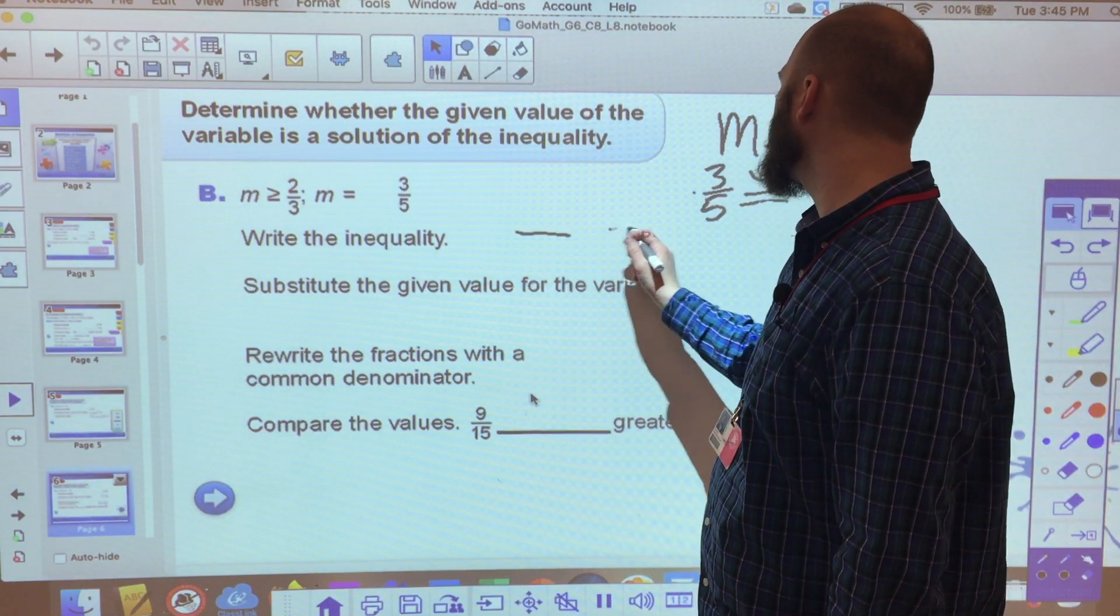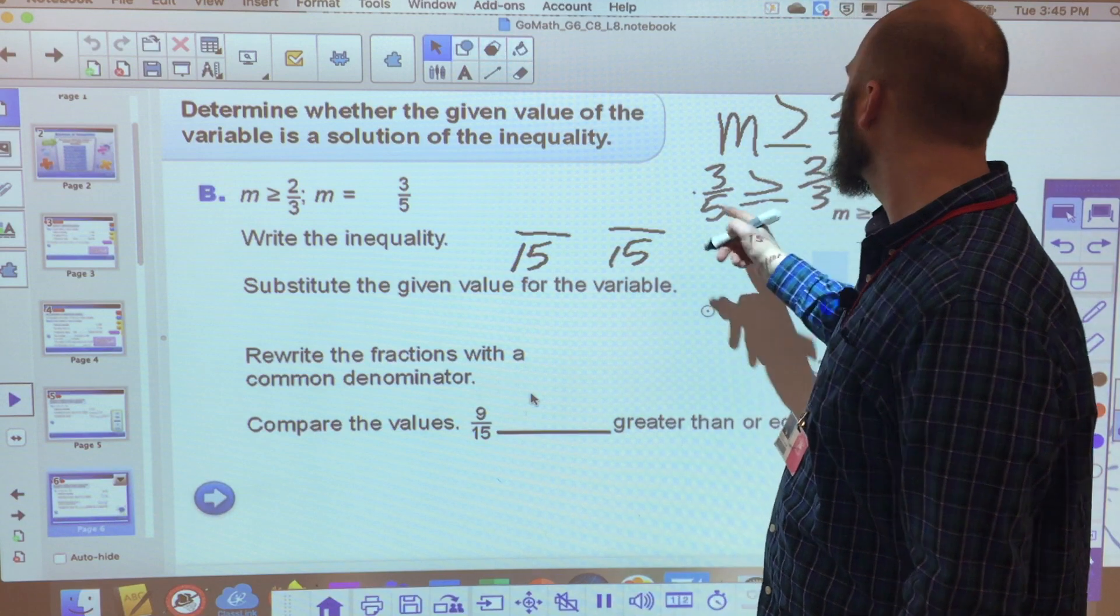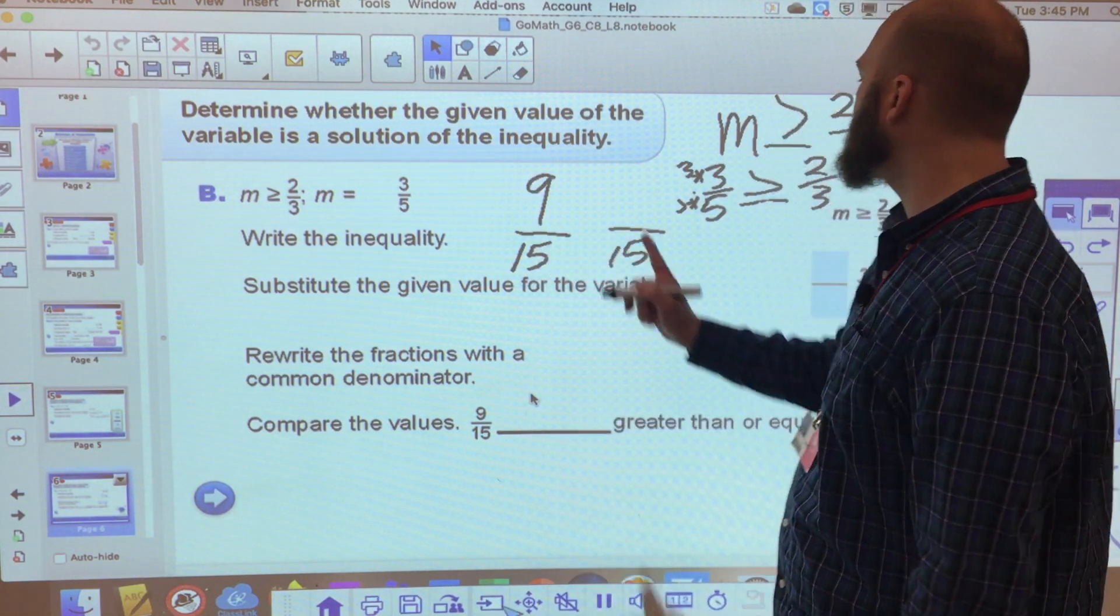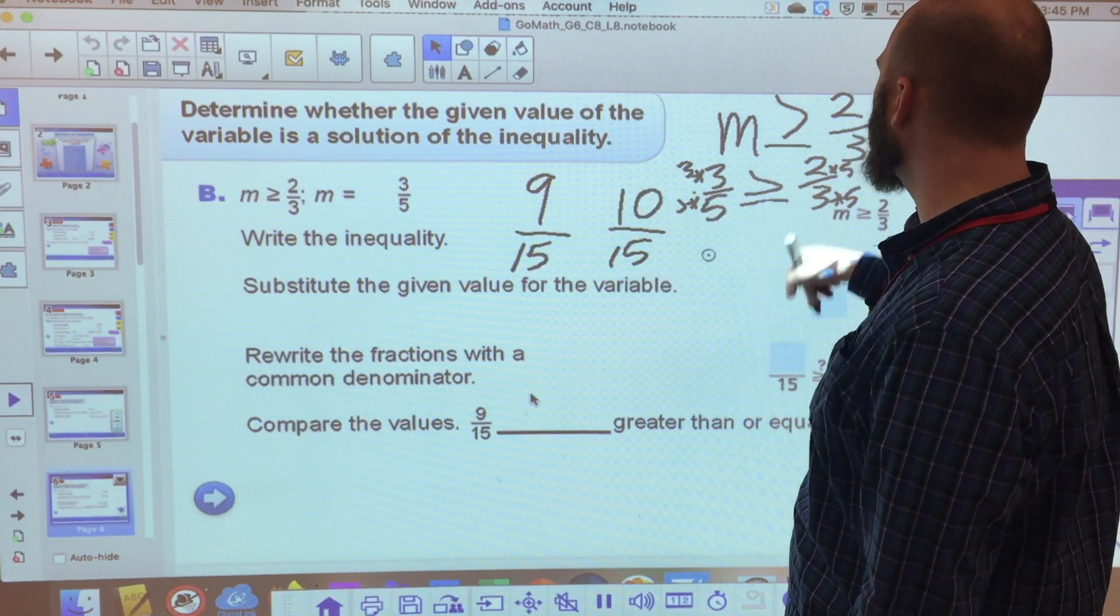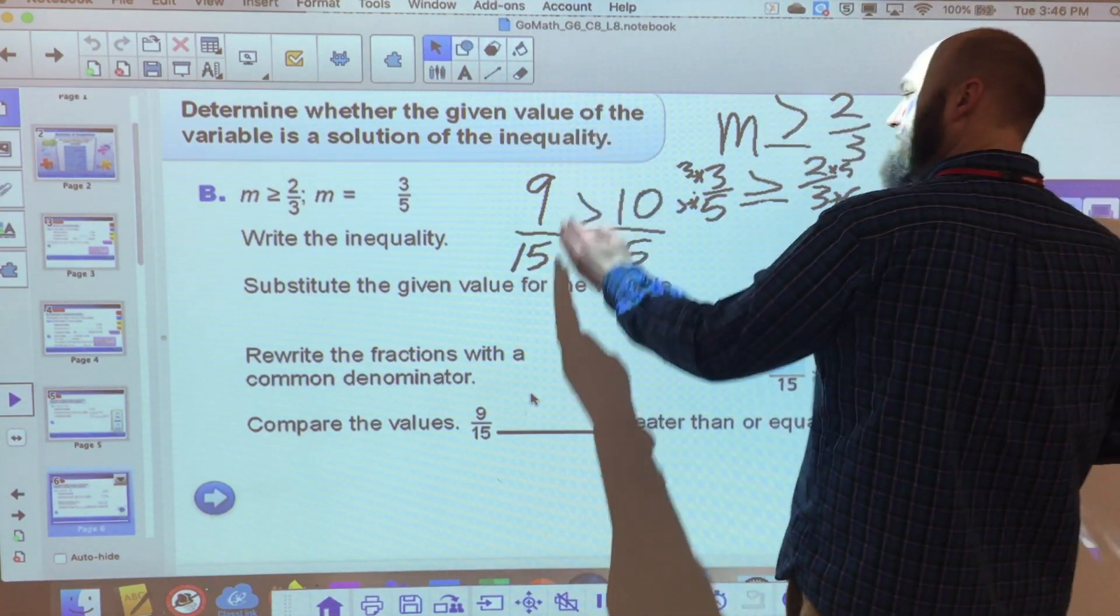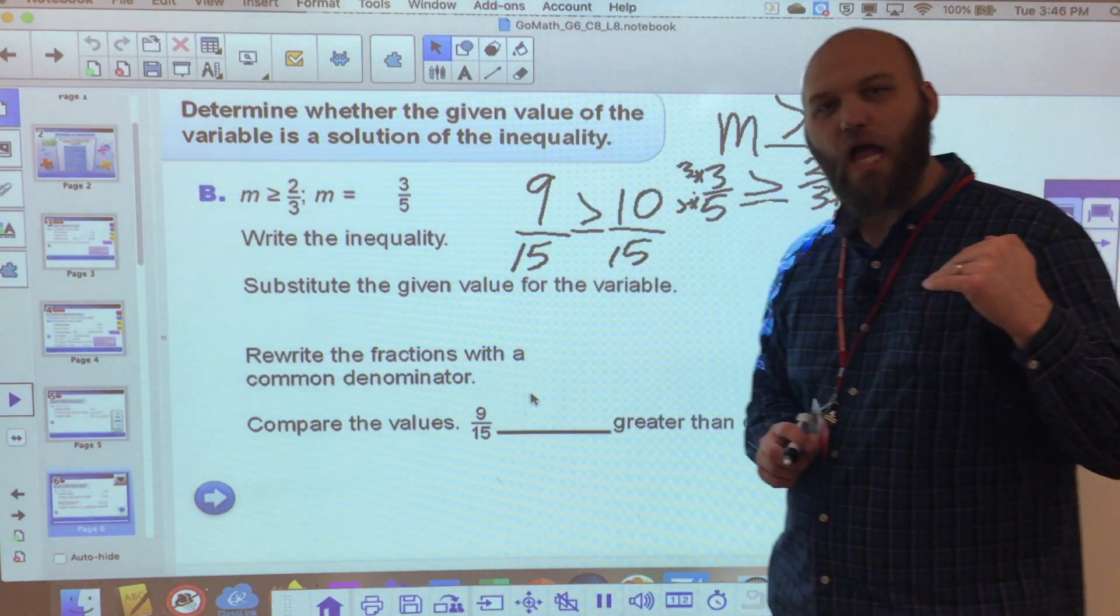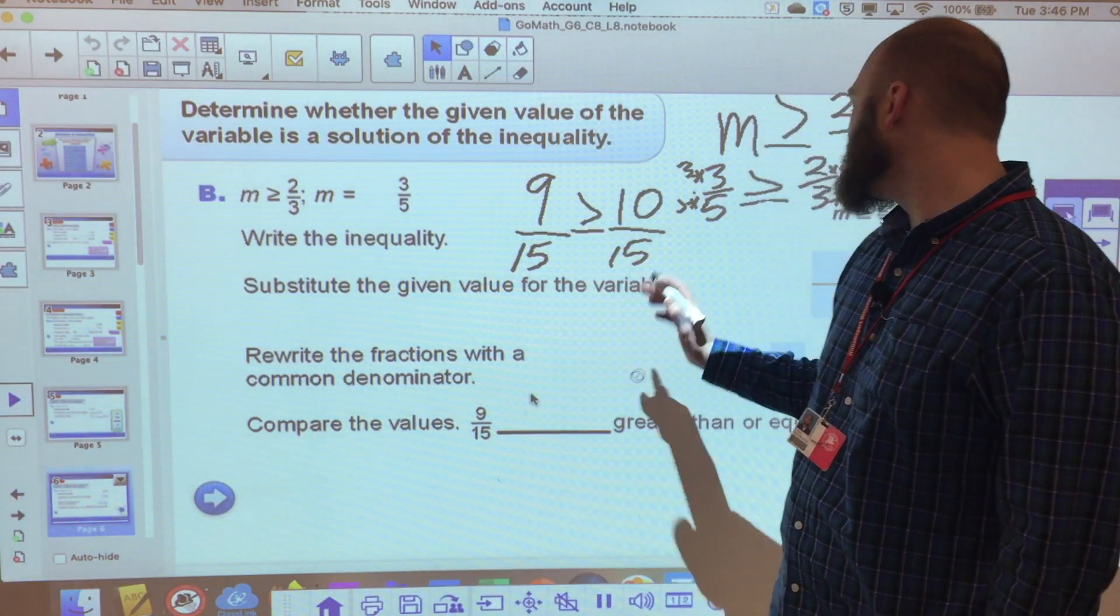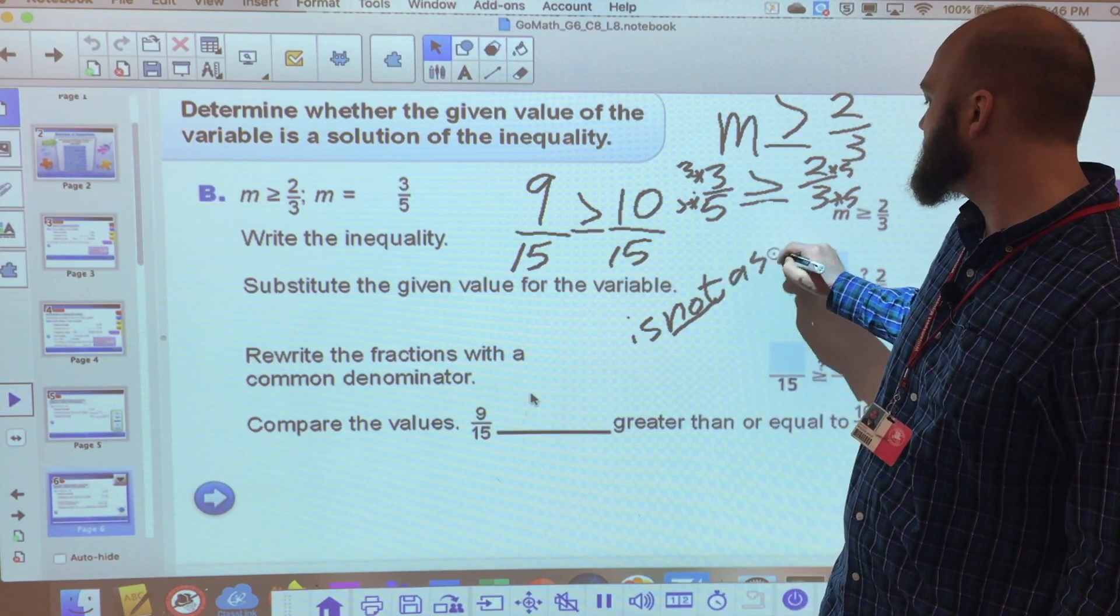All right. Well, in order to do this, like any time I'm comparing fractions, if I'm not just multiplying or dividing, I need a common denominator. 3 fifths and 2 thirds, the common denominator is 15ths. So 5 times 3 and 3 times 3, 9 fifteenths is the equivalent of 3 fifths. 3 times 5 and 2 times 5, 10 fifteenths is the equivalent of 2 thirds. Rewrite your expression. Is 9 fifteenths greater than or equal to 10 fifteenths? No, it is not. It's less than. So 3 fifths or 9 fifteenths is not a solution.